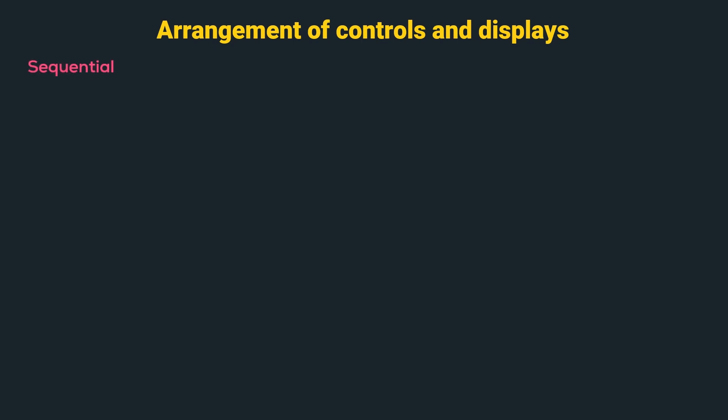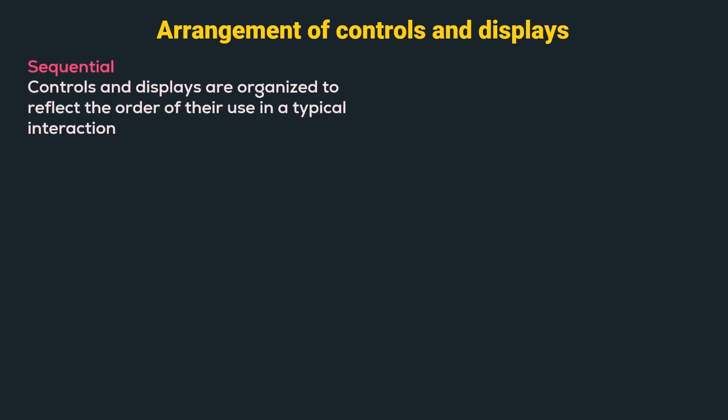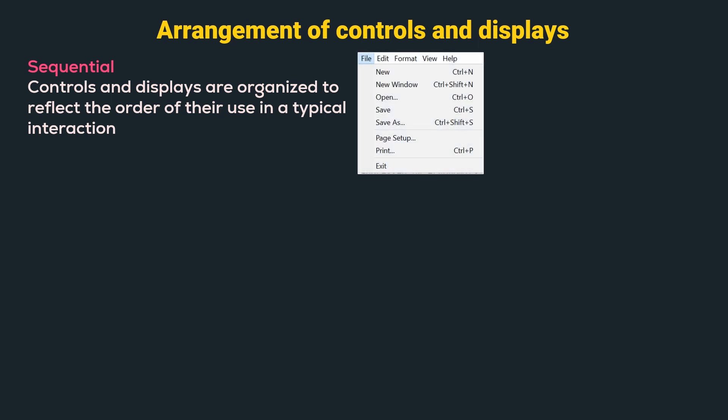The next arrangement is sequential, where controls and displays are organized to reflect the order of their use in a typical interaction. For example, under the File menu, options are arranged as per their use in an application — like we create or open a new file, save the file, print the file, and then exit the application.